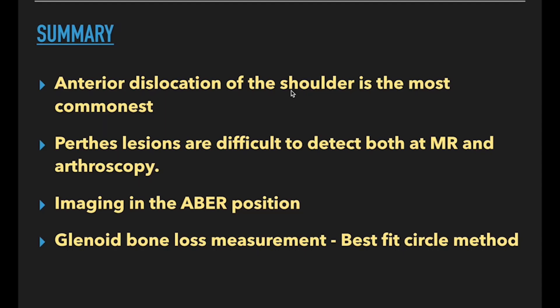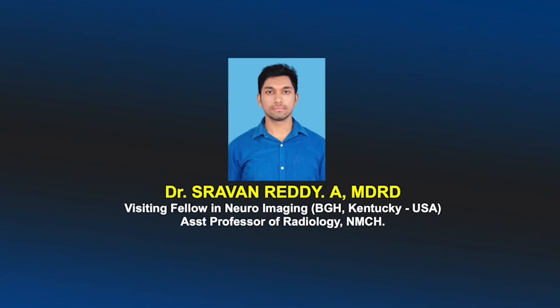In summary: anterior dislocation of the shoulder is the most common type of shoulder dislocation. Perthes lesions are difficult to detect both on CT and arthroscopy because the torn labrum may remain in normal position; imaging with abduction and external rotation position increases the detection rates of these lesions. An important thing radiologists should include in their report is the amount of glenoid bone loss. This is calculated using the best fit circle method, where the percentage of bone loss of the glenoid is mentioned and the surgeon plans repair accordingly using a coracoid transfer procedure to repair the glenoid bone. Thank you, hope this video was useful to you.